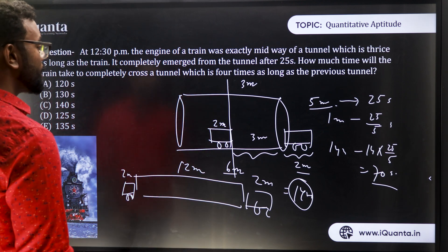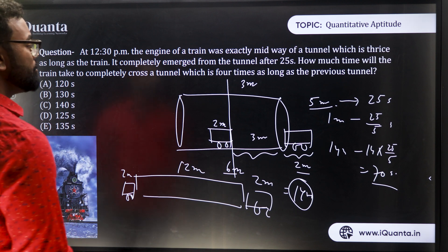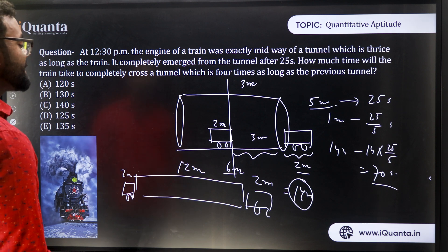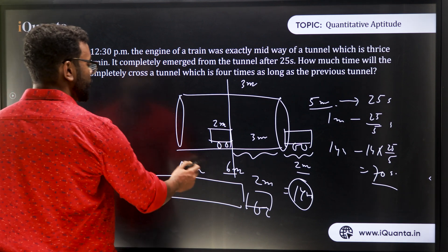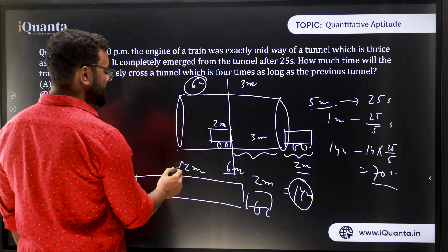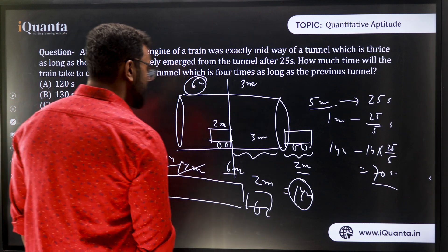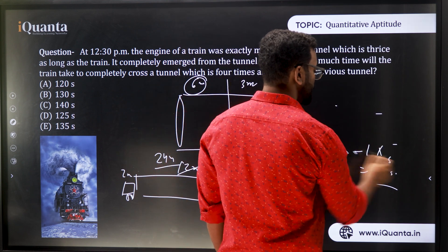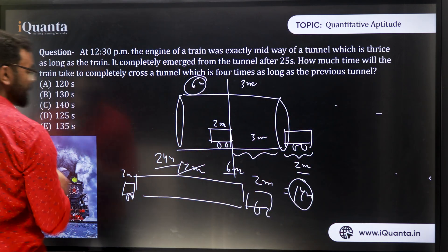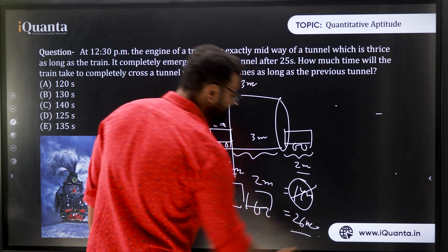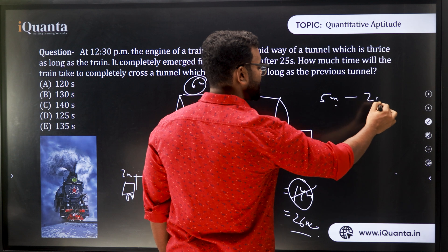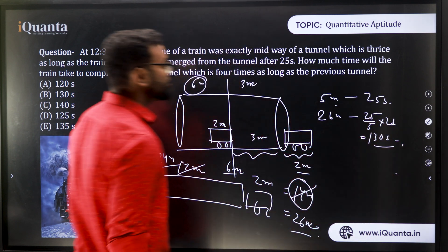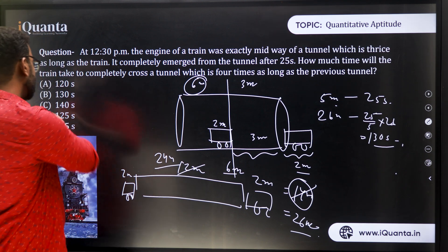Since 5 meters is covered in 25 seconds, 1 meter takes 25/5 = 5 seconds. So 26 meters takes 26 × 5 = 130 seconds. The answer is 130 seconds, which is option B. That's how we solve this type of question.